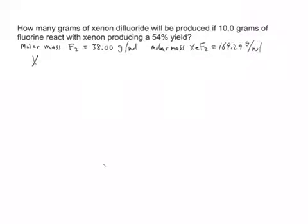First we're going to balance the equation. Xenon is a gas, it's a noble gas, and fluorine is diatomic. It's a gas as well, and we get xenon difluoride, and that's a gas. Simple equation to balance.